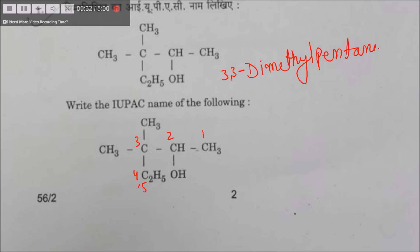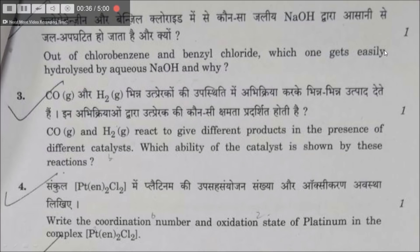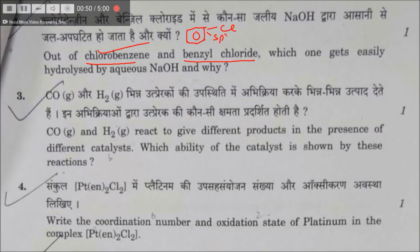Out of chlorobenzene and benzyl chloride, which one is difficult to be hydrolyzed? The answer is chlorobenzene, because in chlorobenzene, chlorine is directly attached to the benzene ring which is sp2 hybridized carbon, and there is a partial double bond, so it is difficult to break.